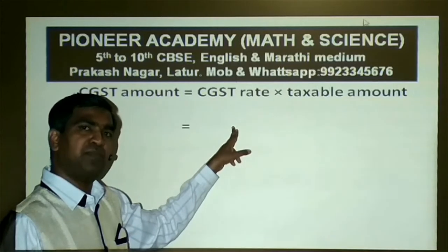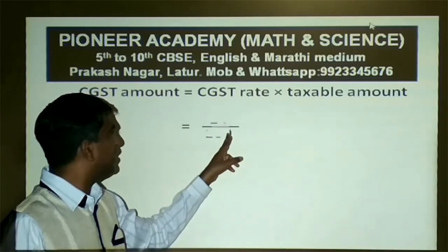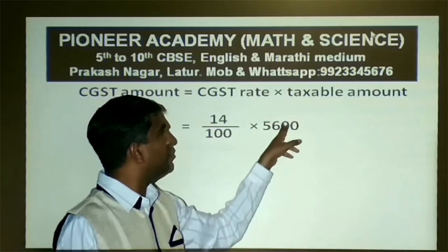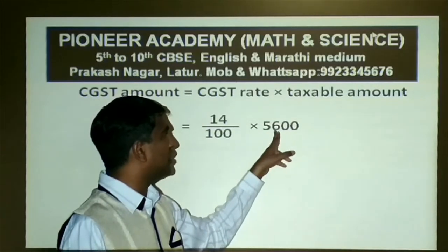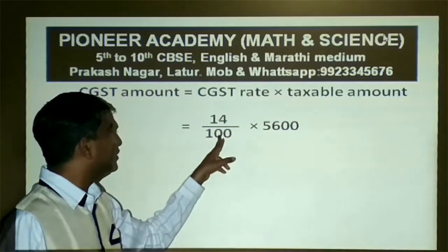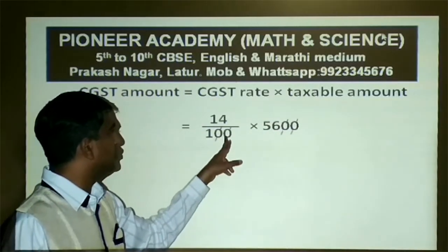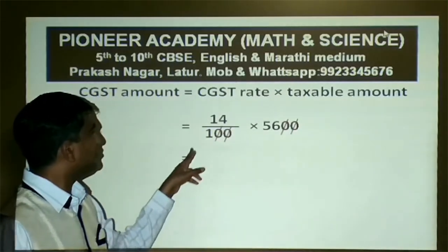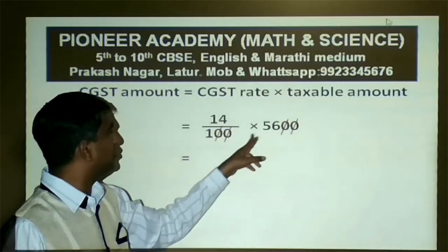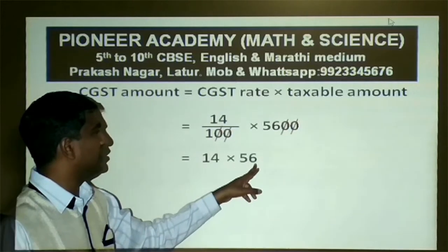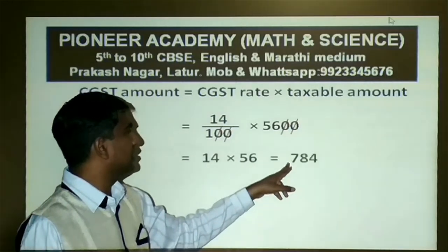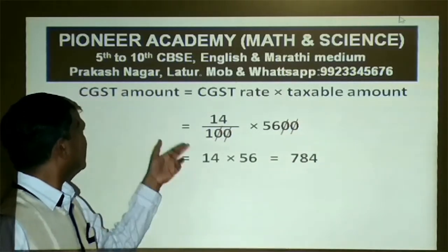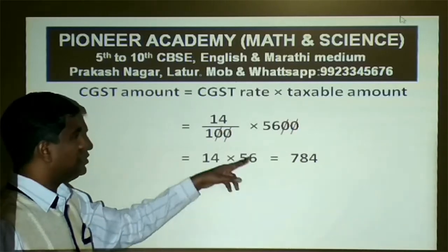CGST amount equals CGST rate multiplied by the taxable amount. CGST rate is 14%, which is 14 divided by 100, into the taxable amount of 5600. The two zeros cancel, giving 14 into 56, which equals 784. So the CGST amount is Rs 784.